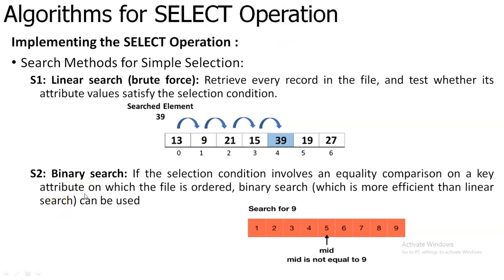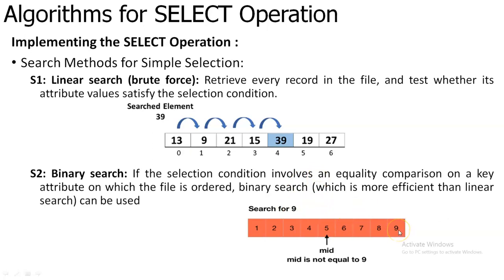The next one is binary search. In binary search, you will be having a search element and a set of data present in your database. In binary search, the whole index will be divided into two. Here you are going to have 10 elements, that is index 0 to 9. It will be divided at the middle and compared with the search element. If your search element is lesser than the middle element, it will be searching at the left side. If the search element is greater than the middle element, it will be searching on the right side. Comparing with linear search, in linear search all the elements will be stored randomly, but in binary search every element will be present in ascending or descending order — throughout the file will be in an ordered manner.